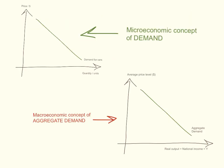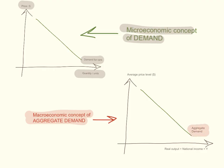In microeconomics, we draw the demand curve as a relationship between price on the y-axis and quantity demanded on the x-axis, and it is a negatively sloping curve — for example, the demand for cars. The macroeconomic concept of Aggregate Demand looks the same: it is still negatively sloping and we label it Aggregate Demand, but the relationship is between the average price level and real output, real GDP, or real national income on the x-axis. Remember, the labels are very different and the concept itself is very different.